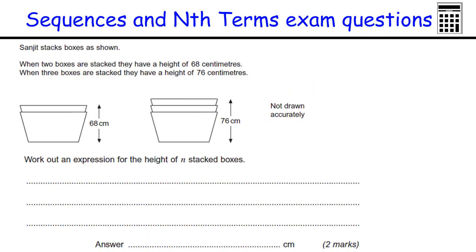One more question. Sometimes this sort of question is embedded inside other questions. I'll just quickly run through this first part. Two boxes are stacked. This is a height of 68. Then we get three boxes. The height is 76. So this is building up a sequence where each time I put a new box in, it's going to go up eight. So one of these would be 60. So it starts off at 60. Then it goes to 68, then it goes to 76, then it goes to 84 and so on.